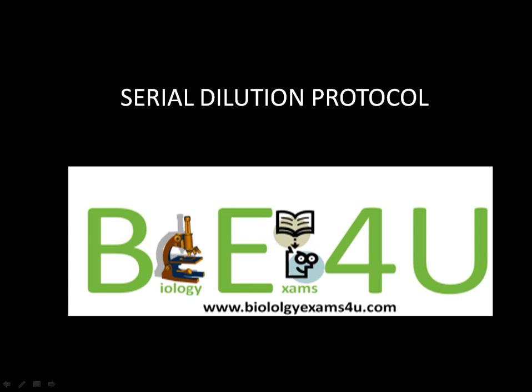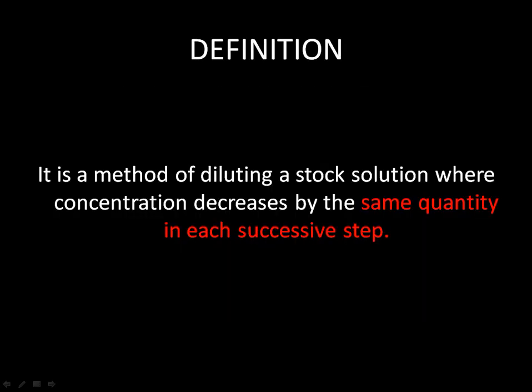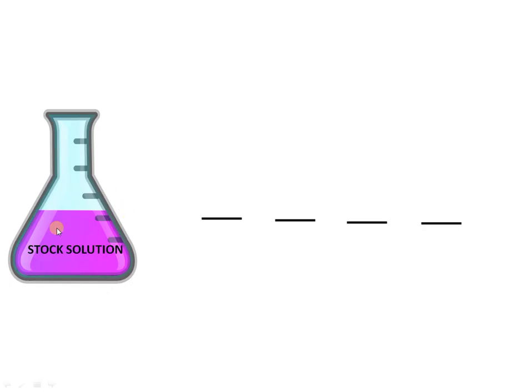Hi friends, in this tutorial we are going to discuss the serial dilution procedure in detail. It's a method of diluting a stock solution where concentration decreases by the same quantity in each step. This is key: the decrease in concentration is the same quantity in each successive step.